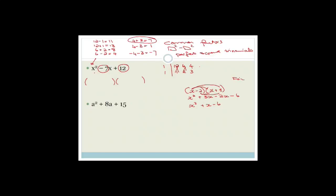The rule is: if the last sign is positive, then both brackets have the same sign — and they're both whatever the middle sign is. So since the last term is positive and the middle sign is minus, both brackets get a minus. Since the coefficient of x is 1, we have x and x, and we look for factors of 12 that add up to 7. That's 4 and 3, giving us (x − 4)(x − 3).